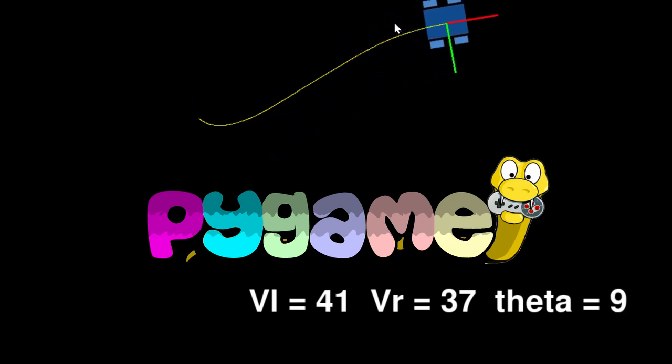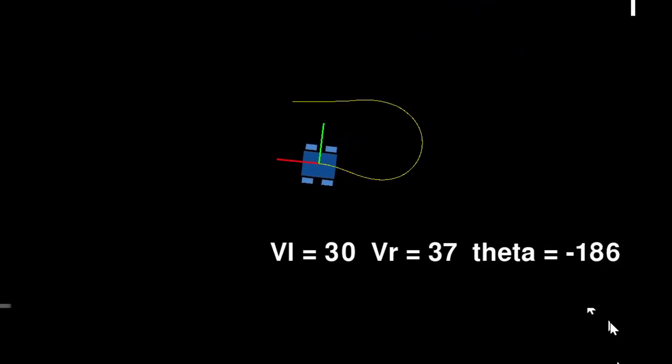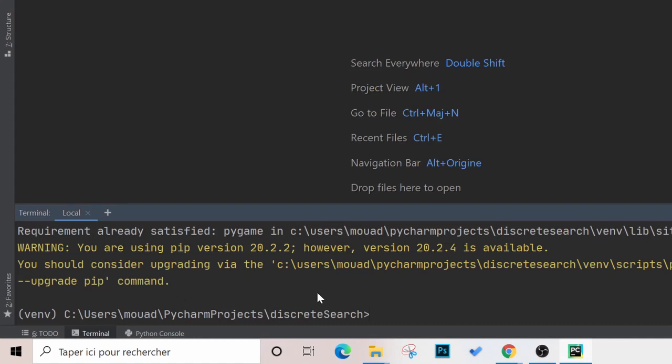One way to install the pygame module is to open the terminal and type the command pip install pygame. This will only take a few seconds.